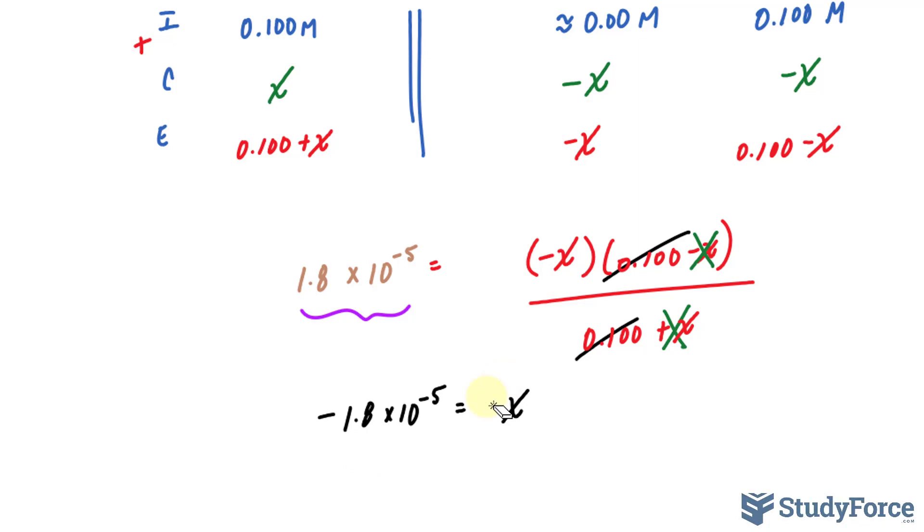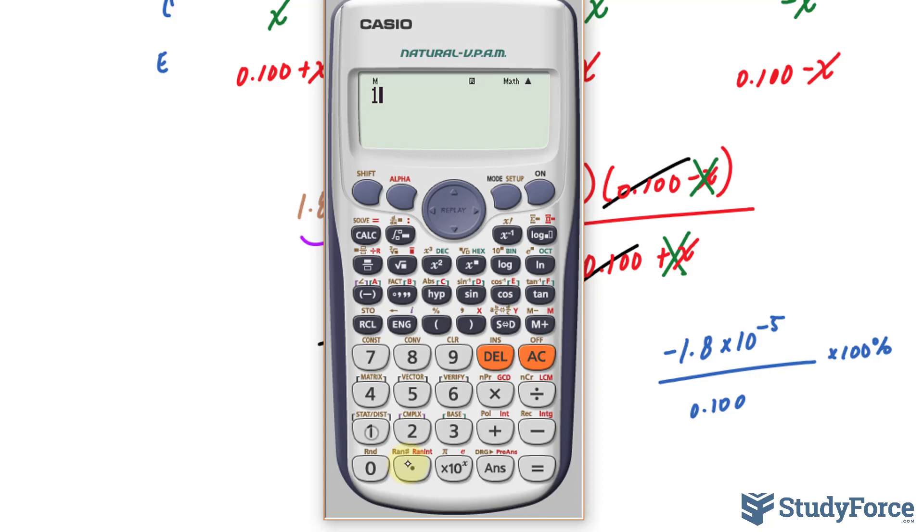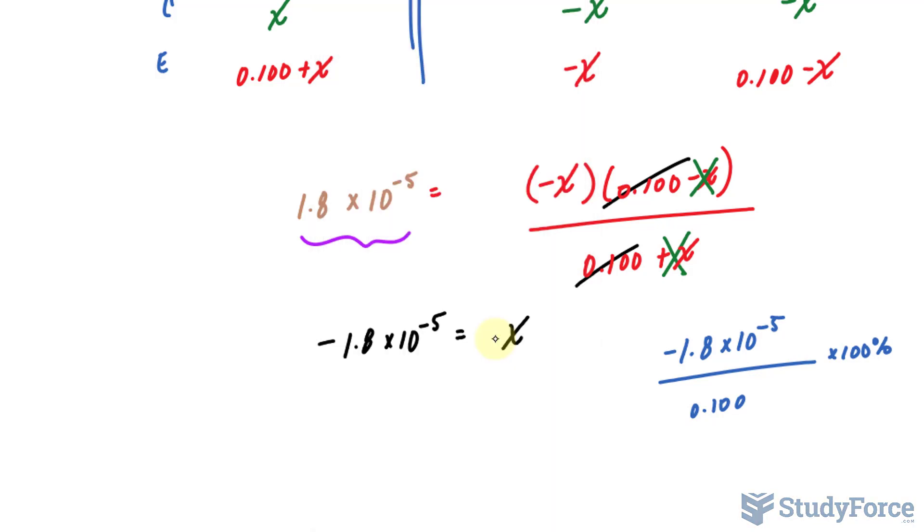Now of course, you want to make sure that your assumption of removing the plus x and the minus x is correct. So what you can do is find the percentage of this number compared to 0.100. And if it's less than 5%, then you've made the correct assumption. So negative 1.8 times 10 to the power of negative 5 divided by 0.100 times 100%, and ignore this negative. So 1.8 times 10 to the power of negative 5 divided by 0.1 times 100 gives us 0.018%. That's less than 5%, so the fact that you removed the plus x and the minus x is a good assumption to make.